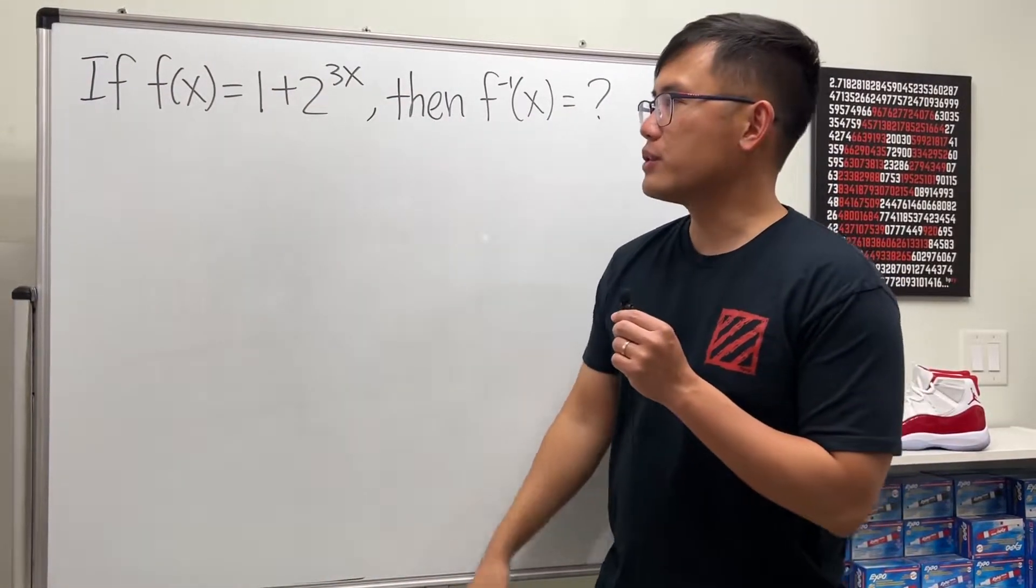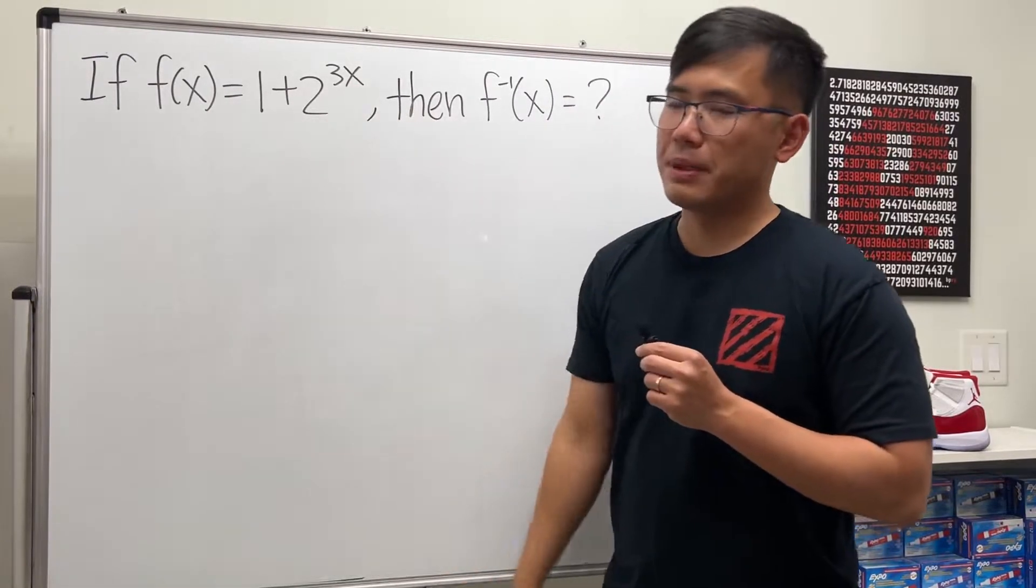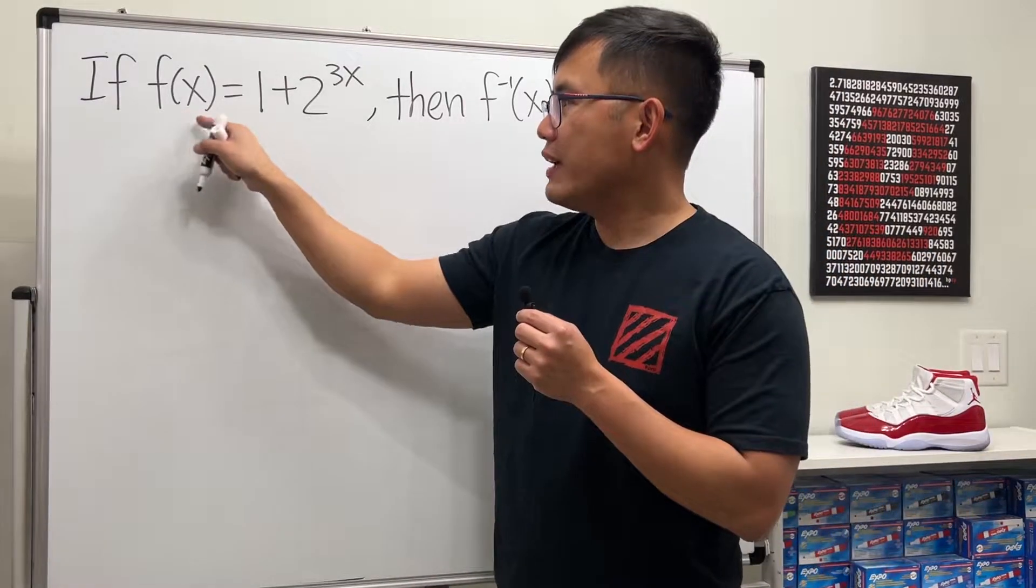Okay, we are going to find the inverse function for f of x equals 1 plus 2 to the 3x power. Let's use the four-step method. First we write f of x as y.